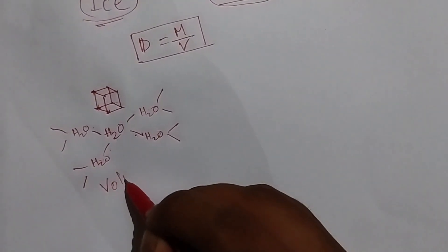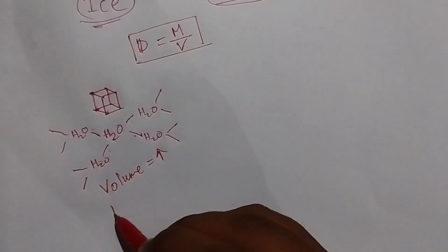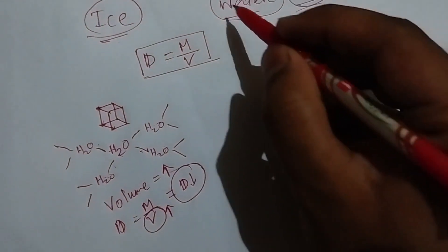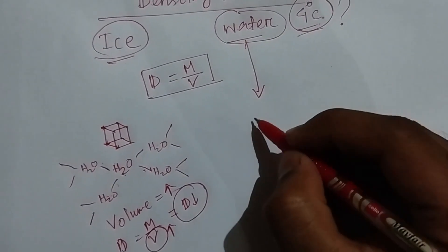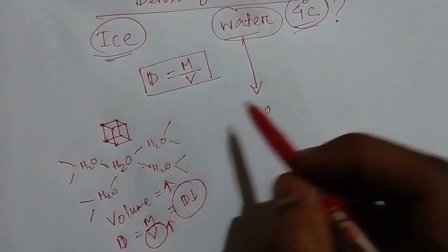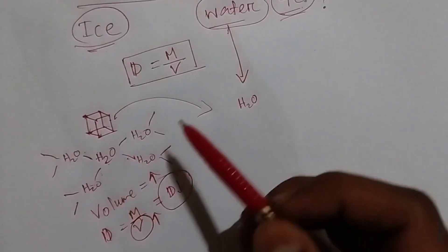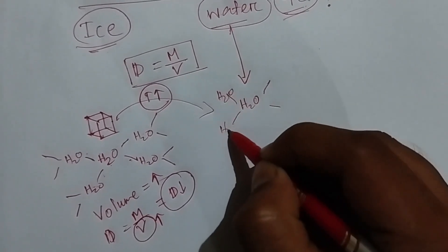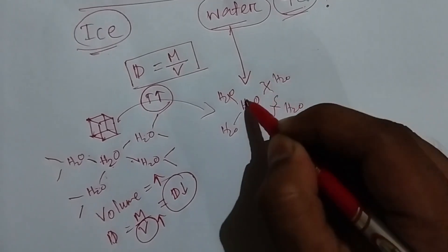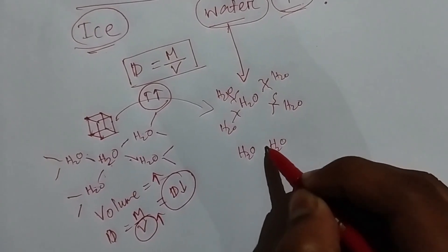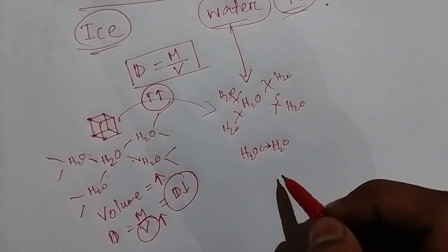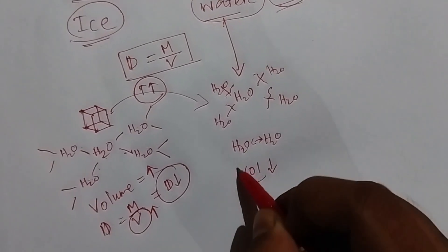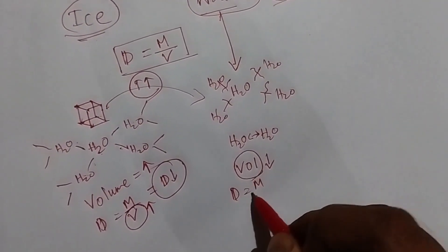Because ice has more open spaces, that means volume is more, and since density equals mass divided by volume, more volume means less density. In the case of water, when we increase the temperature, ice is converted to water. As we increase the temperature, these hydrogen bonds break down and the two water molecules come nearer to each other, so the volume begins to decline.